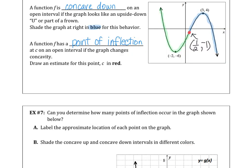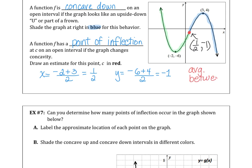We won't have to do this on the AP exam, but you can calculate the average between the minimum and the maximum values. If you take the x-values and find the average, that gives the x-coordinate, and likewise for the y-values — add them and cut in half — that gives the y-value. You won't be asked to do that on the AP exam.